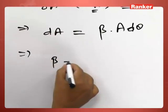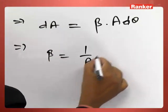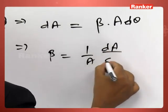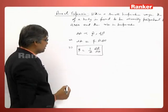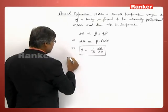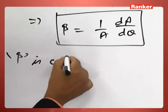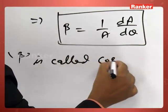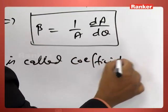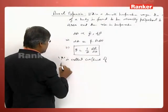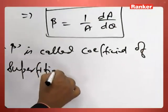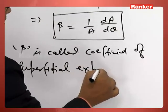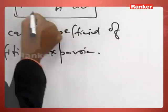We can further write beta as 1 by A dA by d theta. This is how we define beta. Beta is called coefficient of superficial expansion.